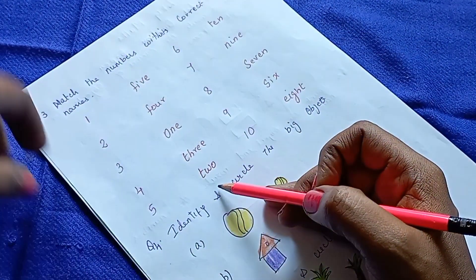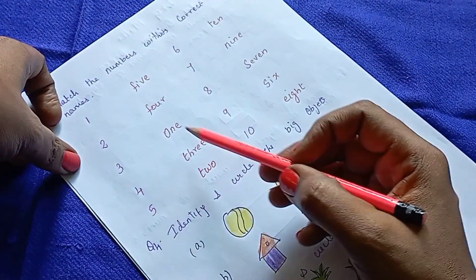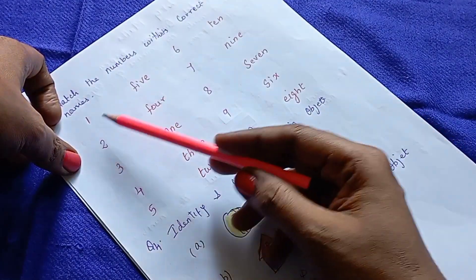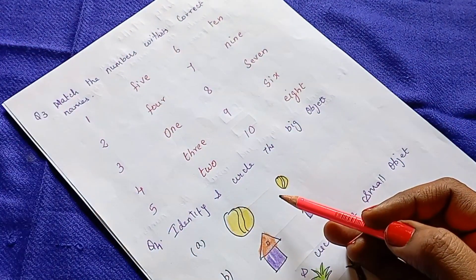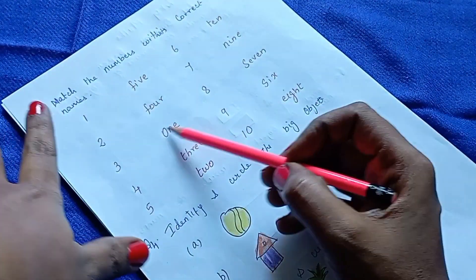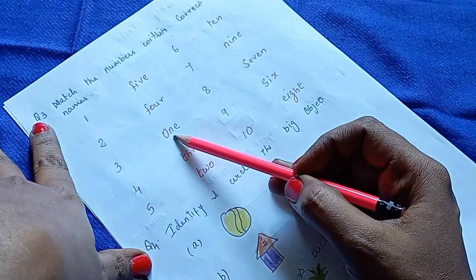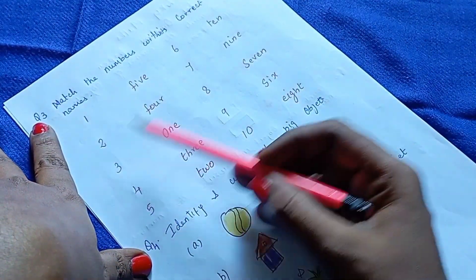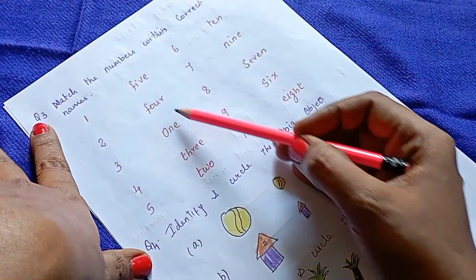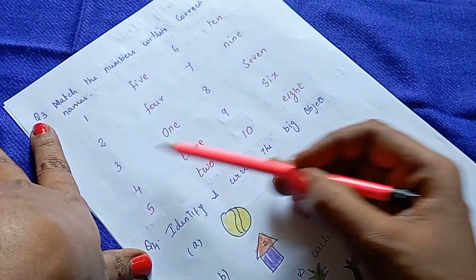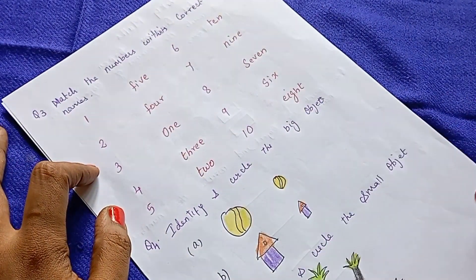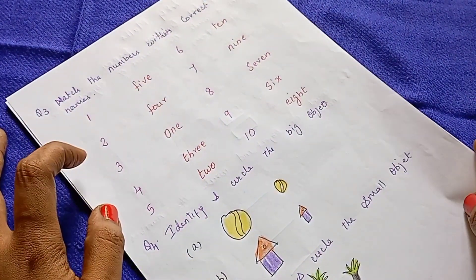The next question is match the following. It has numbers on one side and number names on the opposite side. Kids, draw a line and match the following. The first one is 1 — O-N-E. The second is 2 — T-W-O. The third is 3 — T-H-R-E-E. Match the numbers to the correct number names by drawing a line.